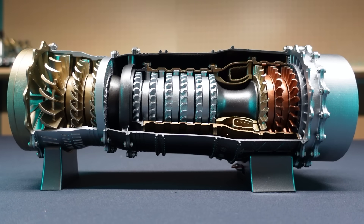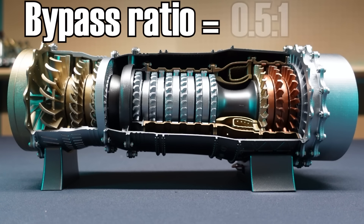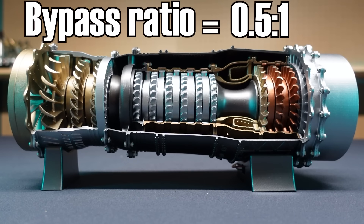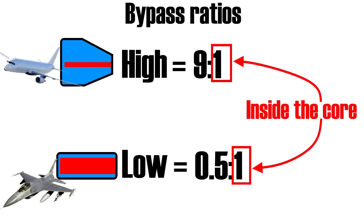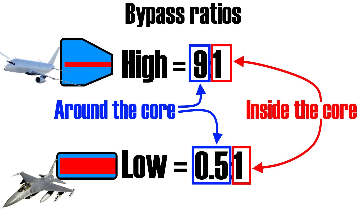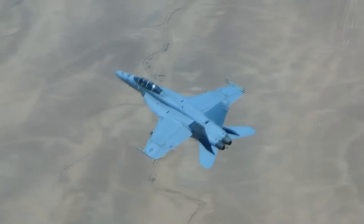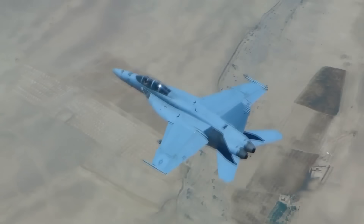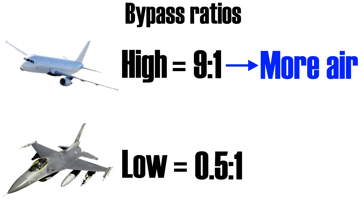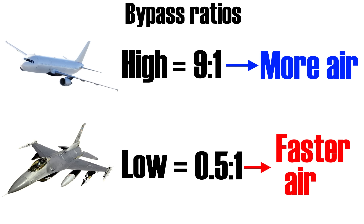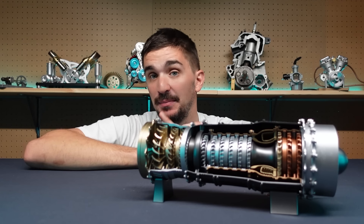This is where low bypass turbofans come in. Their bypass ratio is around 0.5 to 1, compared to commercial turbofans which are usually 9 to 1 and above. A bypass ratio of 9 to 1 means that for every kilogram of air going through the engine core, 9 kilograms go around it. Conversely, a bypass ratio of 0.5 to 1 gets only half a kilogram of air around the core for every kilogram through it. A low bypass ratio improves the cruising efficiency and increases the range of a fighter jet, while the majority of thrust comes by increasing the exhaust velocity — instead of moving more air, a low bypass turbofan moves the air faster, so we are not limited by fan size.